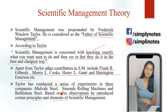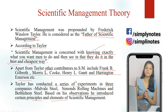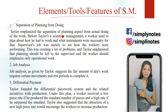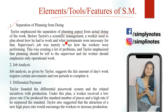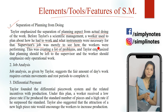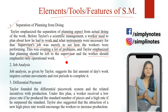The first feature is separation of planning from doing. Taylor advocated that the planning function should be separated from the execution function. Pehle workers decide karte the ki kaam kaise hoga, kaunse methods use honge, kaunse tools use honge, and the supervisor's role was only to oversee the workers. This created a lot of problems because the burden was on workers — they had to plan and perform both. Taylor said planning ka function supervisor ka role hona chahiye ya alag planning department hona chahiye, and workers should only focus on operational work.